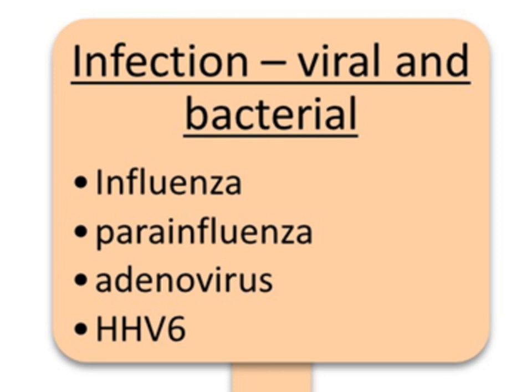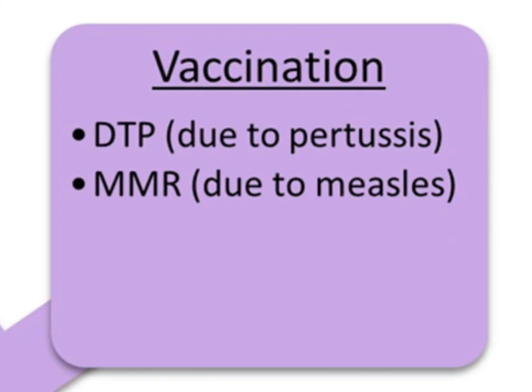Among the common childhood viruses, infections with influenza, para-influenza, and adenovirus were more likely to lead to febrile seizures compared to rotavirus and RSV. HHV-6 has also been reported to lead to increased risk of febrile seizures and furthermore increases the risk of complex seizures and recurrence. Febrile seizures may also occur after vaccination. In particular, the pertussis and measles components of the DTP and MMR vaccinations, respectively, have been associated with increased incidence of febrile seizures.